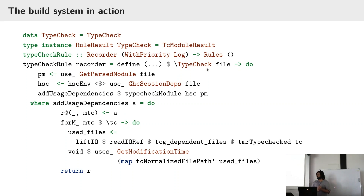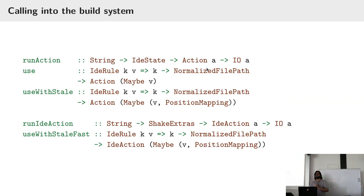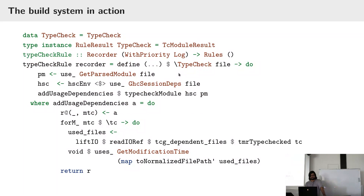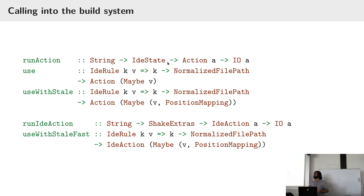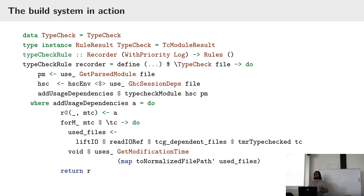That's an introduction to how rules in this build system look. You have this action monad which is what everything in here runs in. The use function takes a key of any type and a file path, and gives you an action returning a maybe result, where the result type is defined by the type family RuleResult.